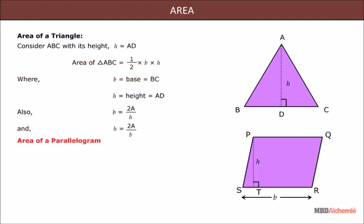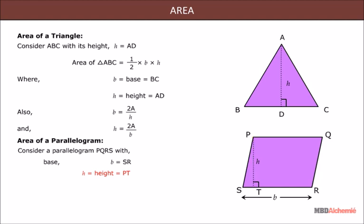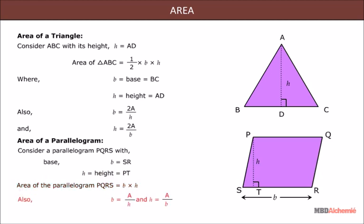Area of a Parallelogram: Consider a parallelogram PQRS with base B equal to side SR and height H equal to side PT. Area of parallelogram PQRS equals B times H. Also, base B equals area divided by height, and height H equals area divided by base B.